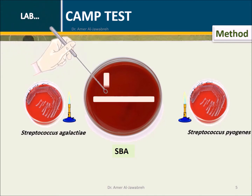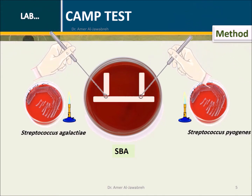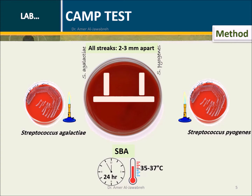Perpendicularly, streak the S. agalactiae and the S. pyogenes colonies to within 2–3 mm of the Staphylococcus aureus streak line, but not touching it. Label each bacteria on the back of the SBA plate. Incubate overnight at 35 degrees Celsius in ambient air or a CO2 incubator.